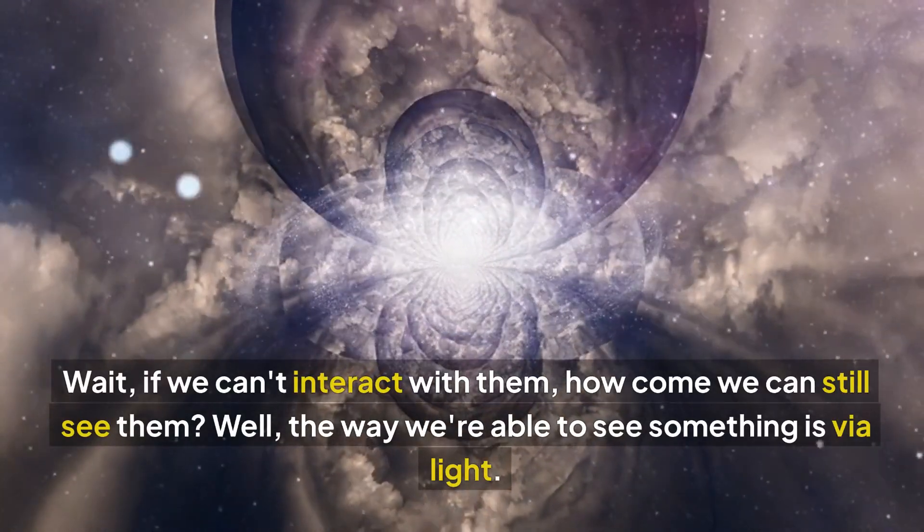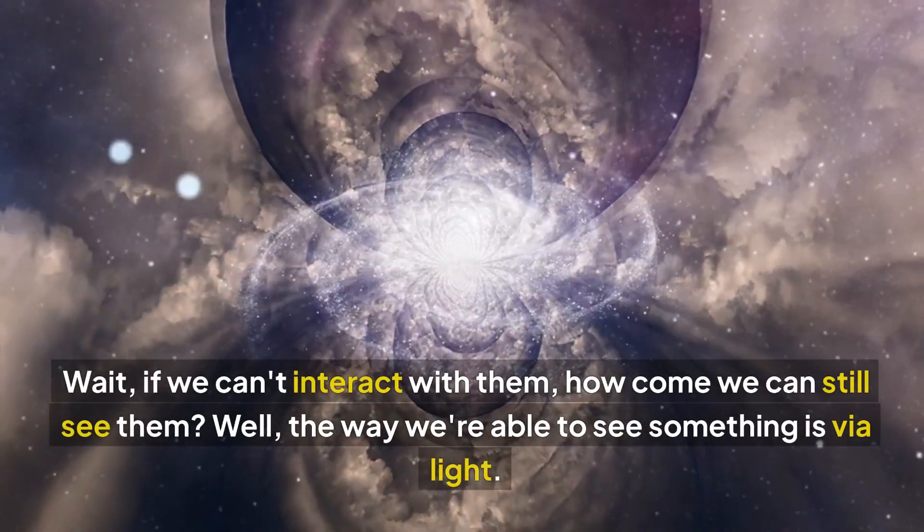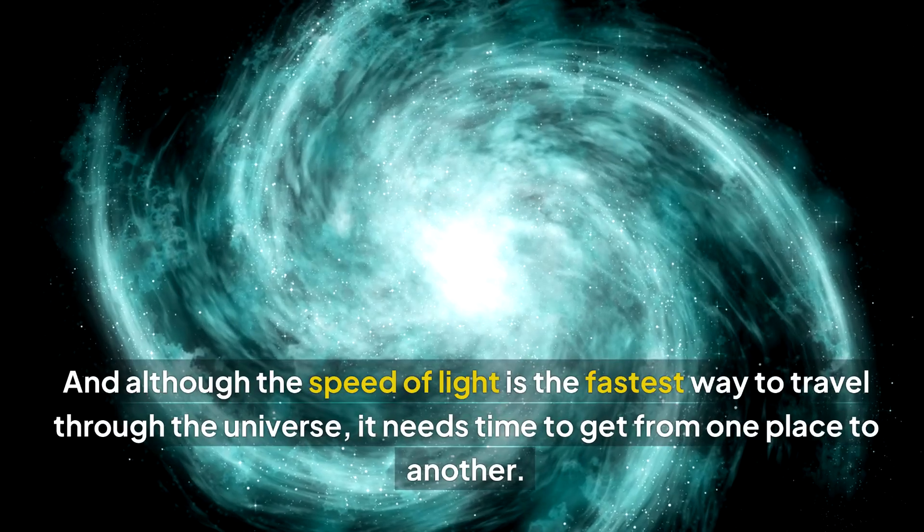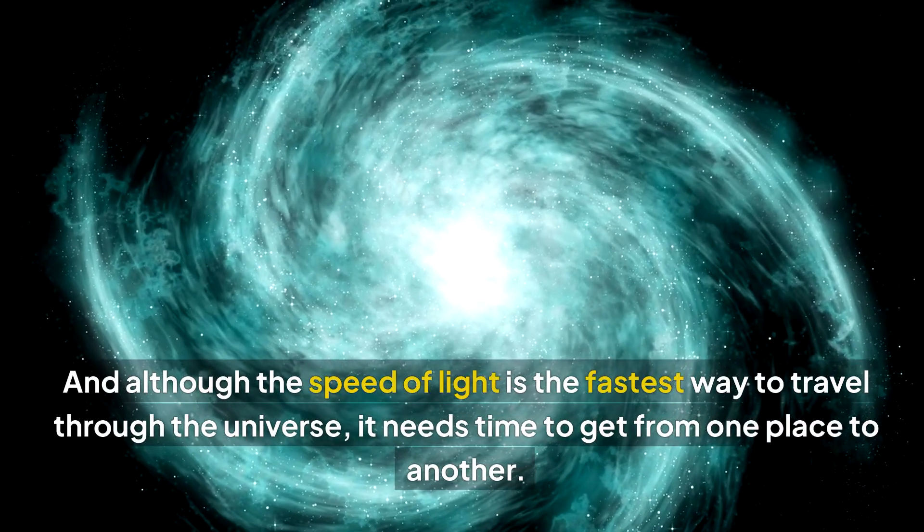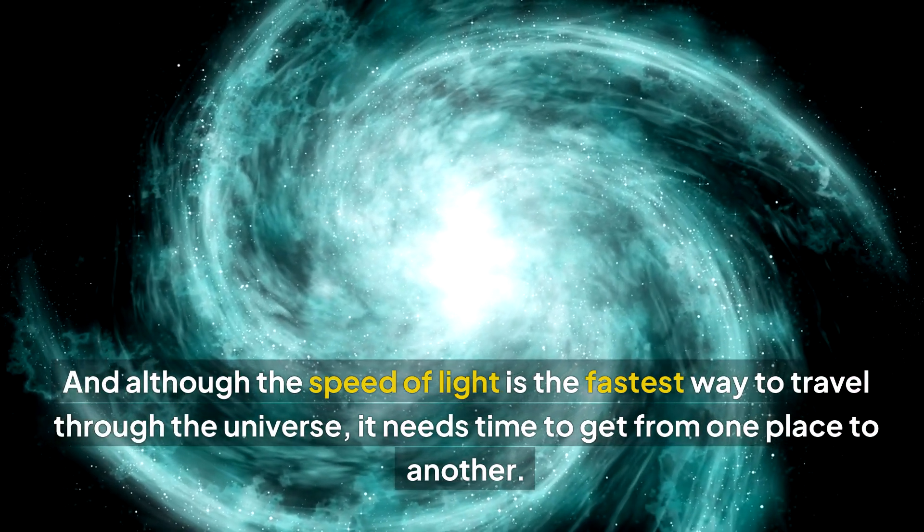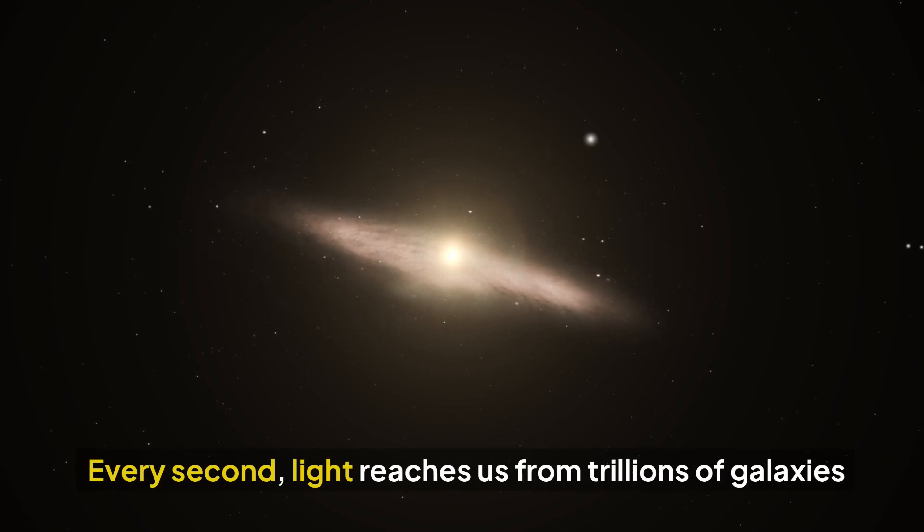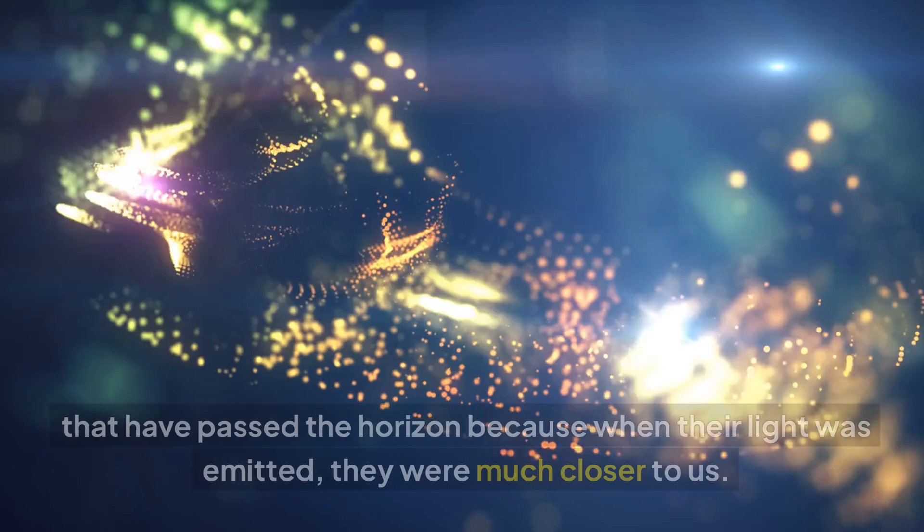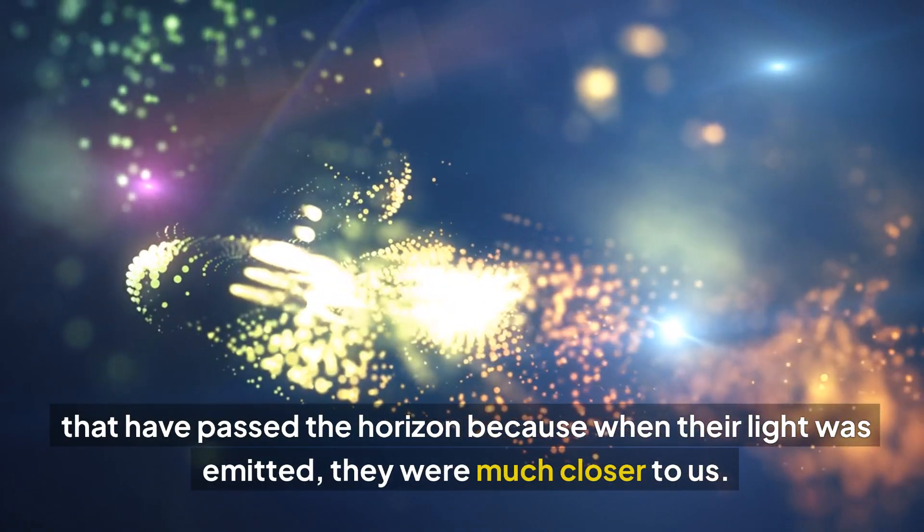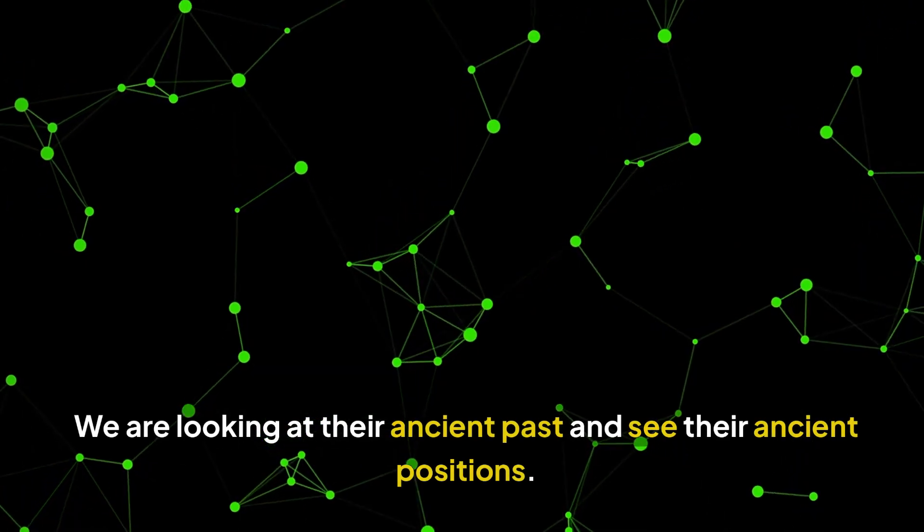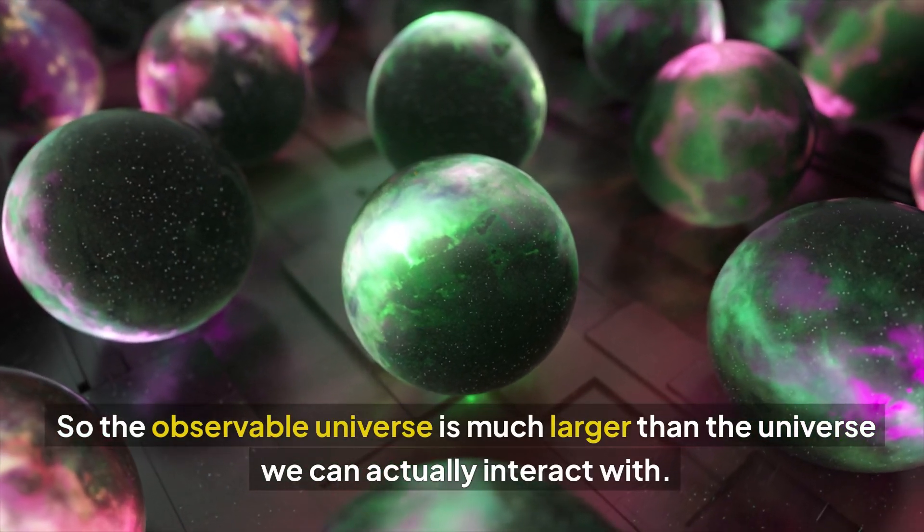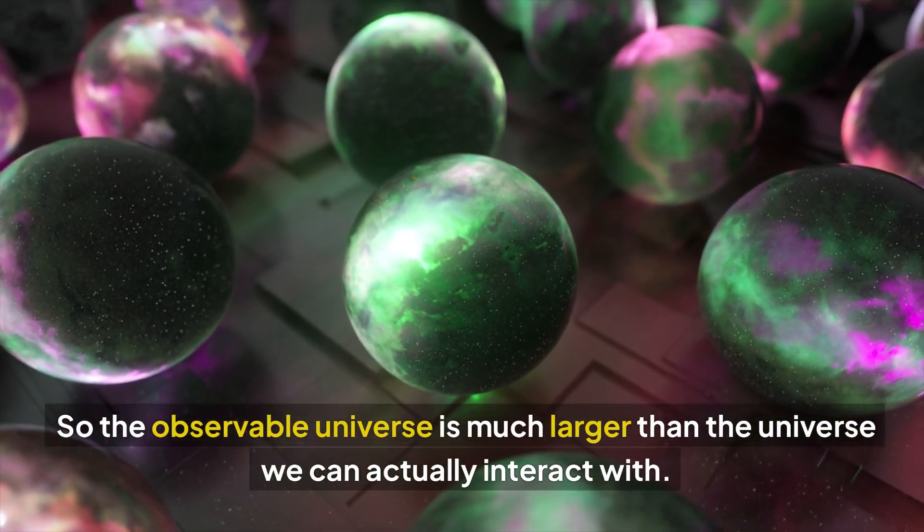Wait, if we can't interact with them, how come we can still see them? Well, the way we're able to see something is via light. And although the speed of light is the fastest way to travel through the universe, it needs time to get from one place to another. Every second, light reaches us from trillions of galaxies that have passed the horizon because when their light was emitted, they were much closer to us. We are looking at their ancient past and see their ancient positions.